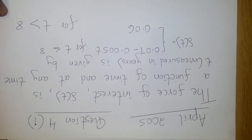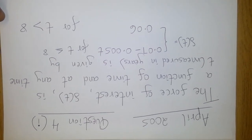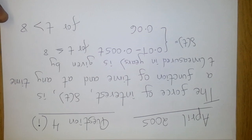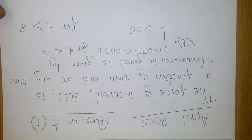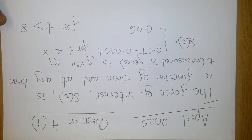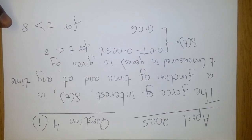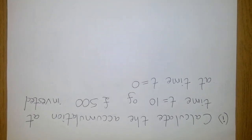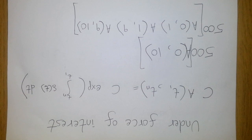For the first eight years the £500 will be accumulated at the rate 0.07 minus 0.05t. Note that the force of interest in year one will be different from year two and year three. From year eight onwards — year nine and year ten — the force of interest will be 0.06.